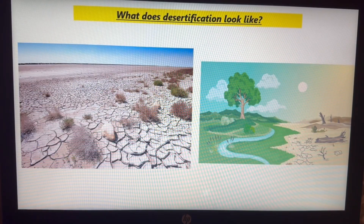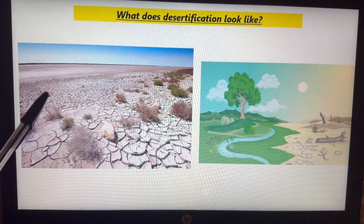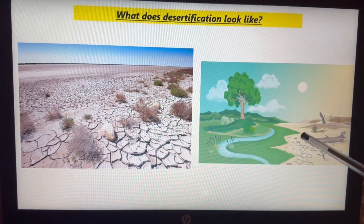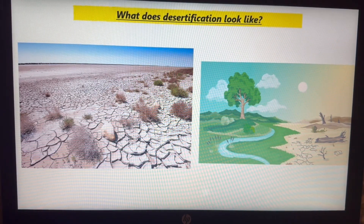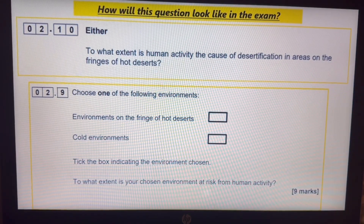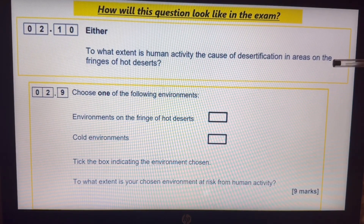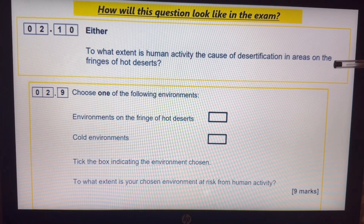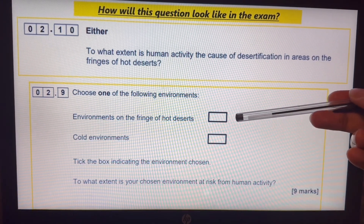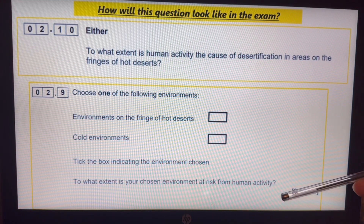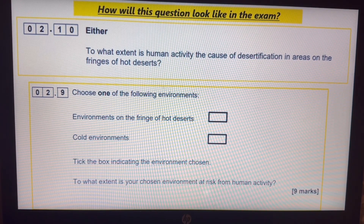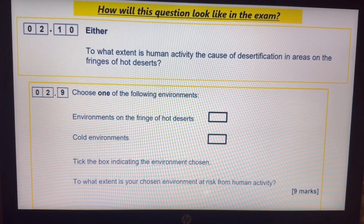To get you thinking about what desertification looks like — eventually all land will turn like this if these causes are not reduced or managed. Green areas will slowly transform into deserts, which is something we want to avoid. These kinds of exam questions — we've seen both nine markers: 'To what extent is human activity the cause of desertification in areas on the fringe of hot deserts?' You will have to say yes, humans are the issue, give two or three causes, then say 'however.'